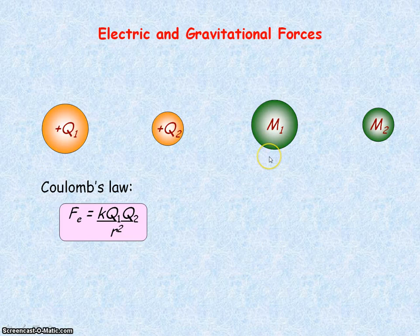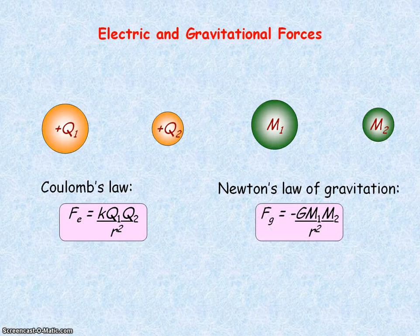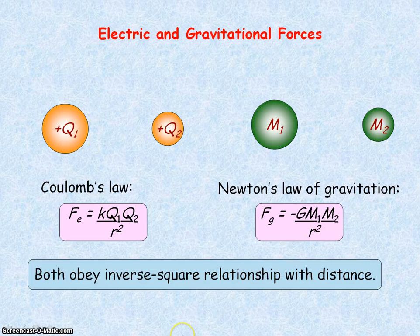The gravitational force between two point masses is given by Newton's law of gravitation, where the gravitational force is directly proportional to the product of the masses and it obeys an inverse square law with the distance r that separates the masses.